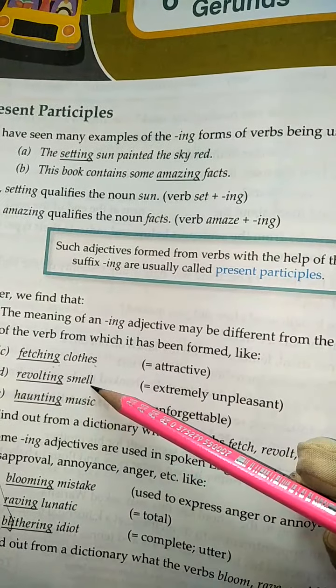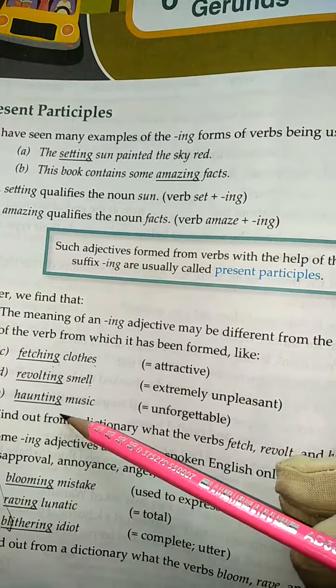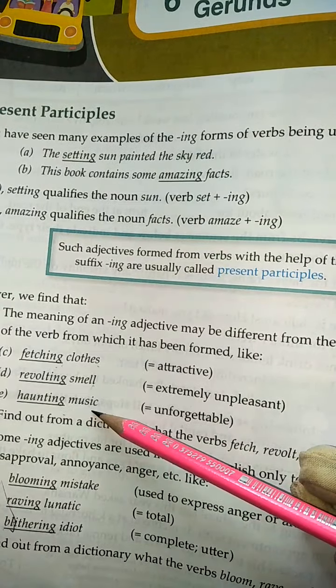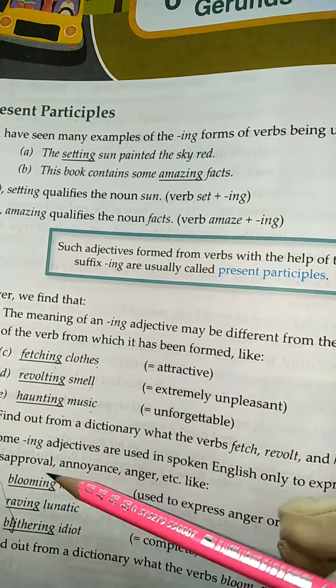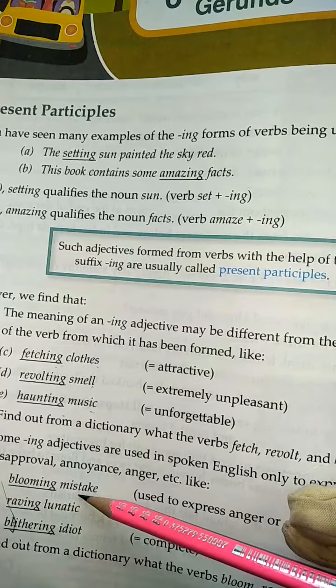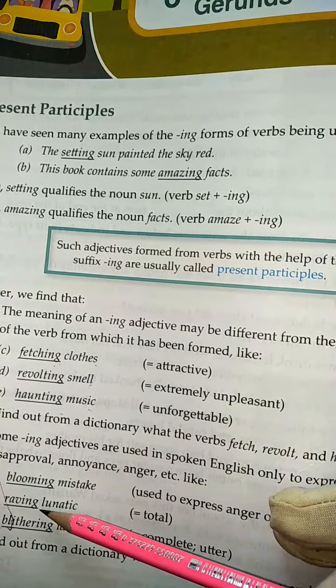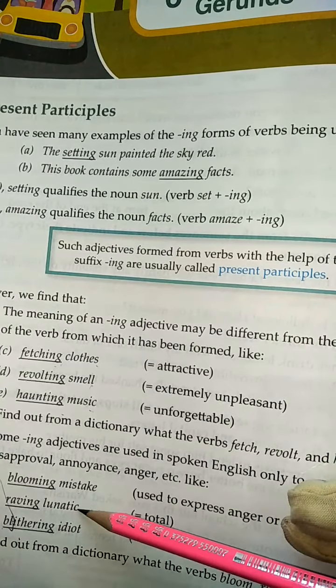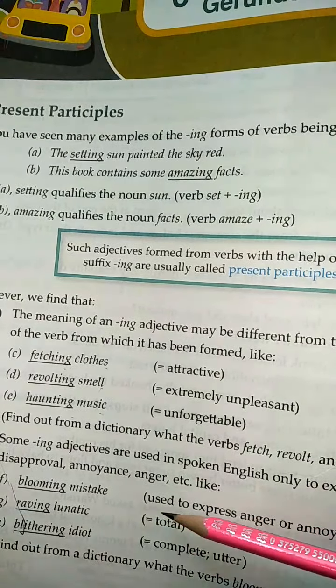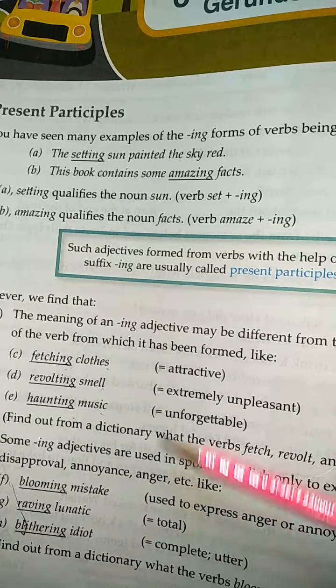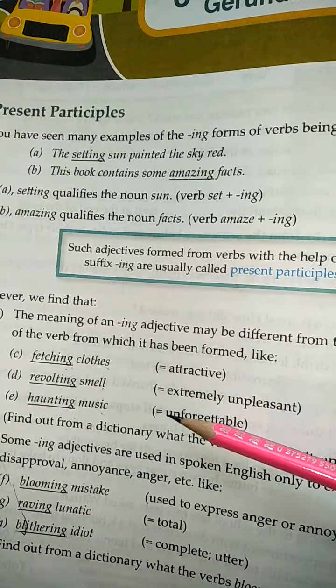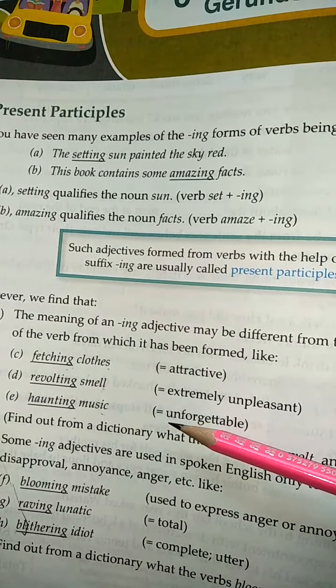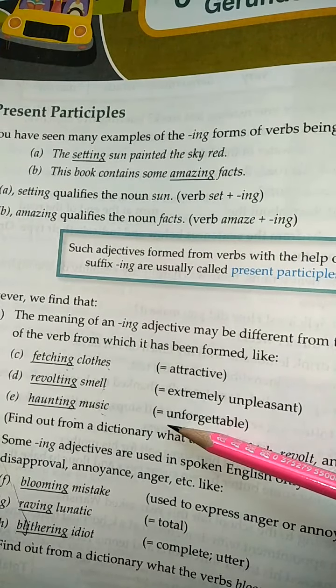More examples of present participles: revolting smell, haunting music, blooming, revving. These are all called participles or gerunds.